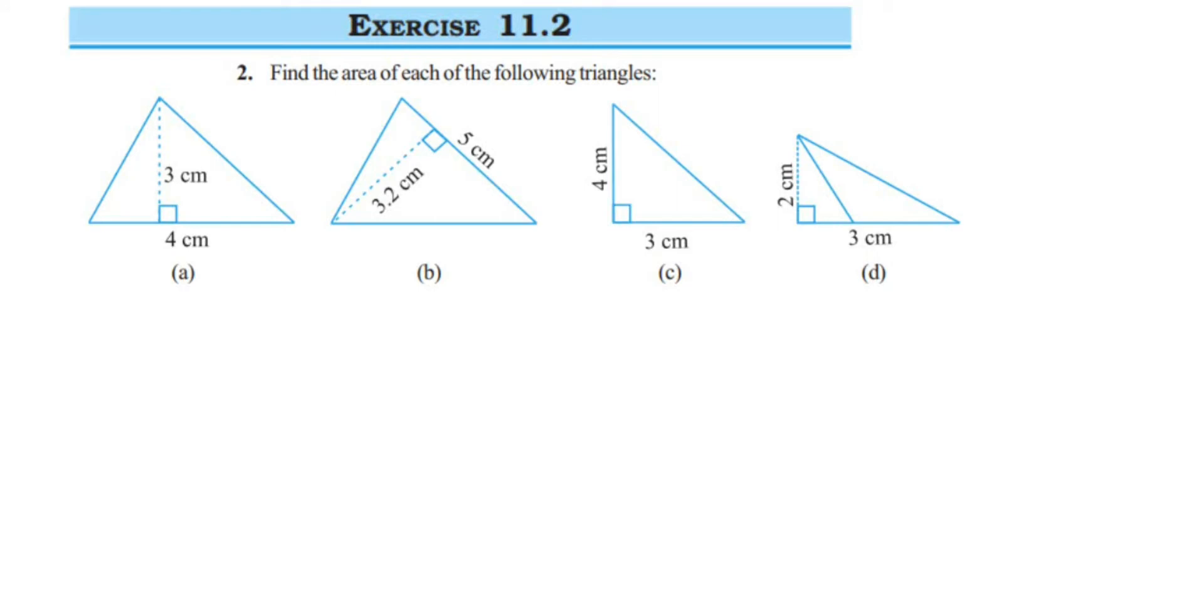Hey everyone, here's a question from Exercise 11.2. This is the perimeter and area chapter of Class 7. The question here is: find the area of the following triangles. We have four different triangles here and we have to find out the area.